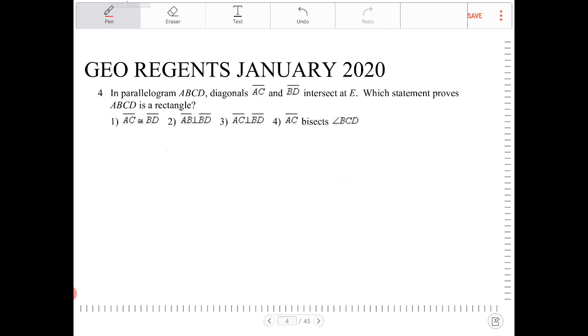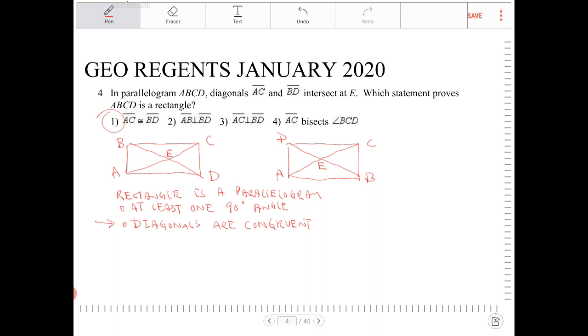It doesn't prove that the parallelogram is a rectangle. As a matter of fact, option three there proves that the parallelogram is actually a square.